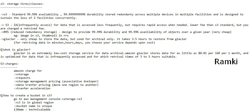Next is RRS — Reduced Redundancy Storage. Durability is 99.99% and availability is the same. For example, if we store an image, we store the image and thumbnail. We store the data with Reduced Redundancy Storage.